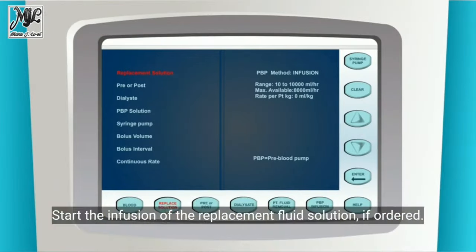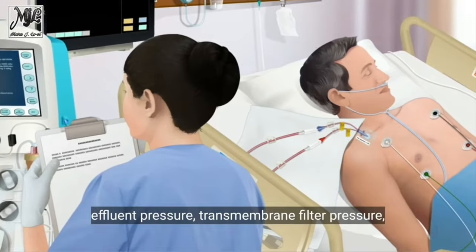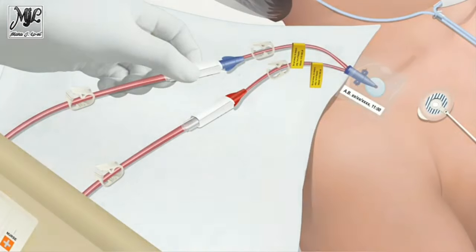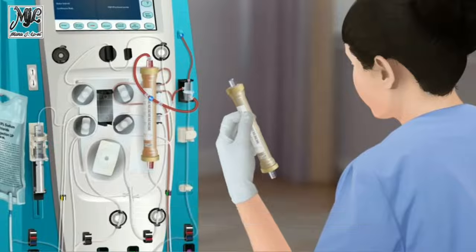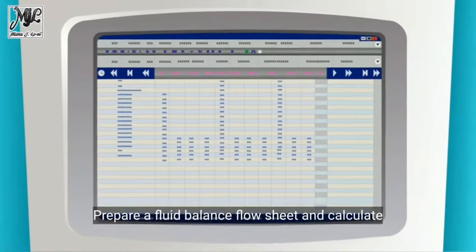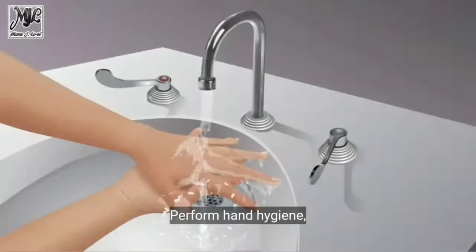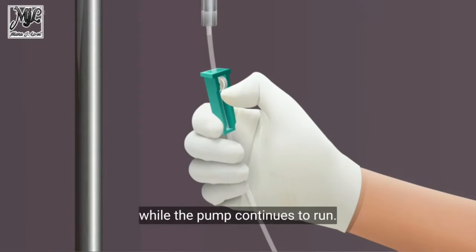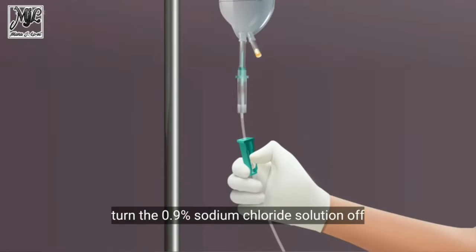CRRT is a slower type of dialysis that puts less stress on the heart. Instead of doing it over four hours, CRRT is done 24 hours a day to slowly and continuously clean out waste products and fluid from the patient. It requires special anticoagulation to keep the dialysis circuit from clotting.